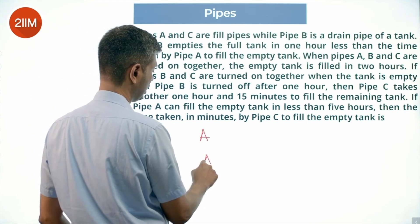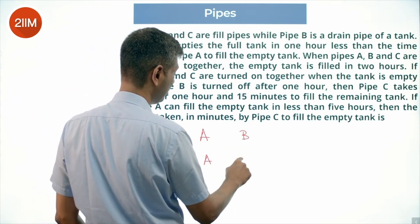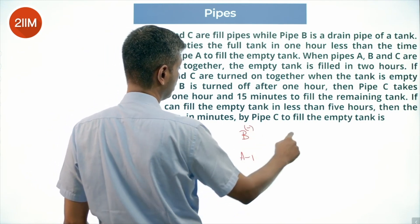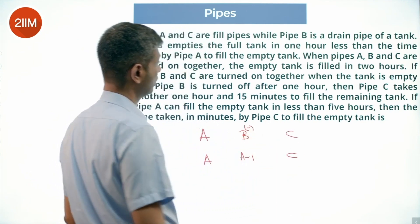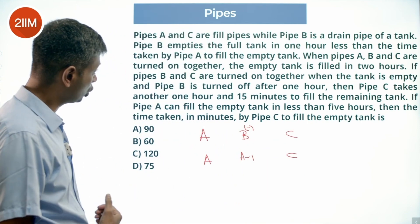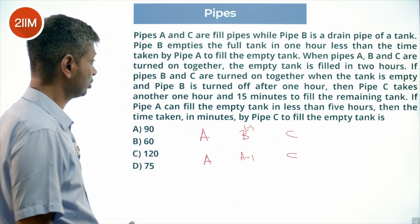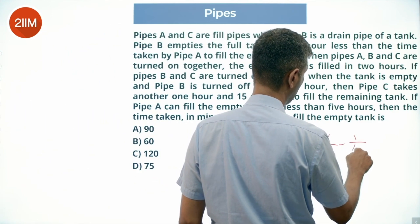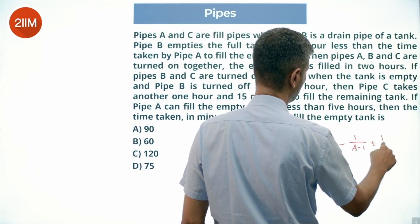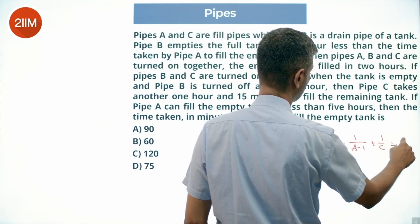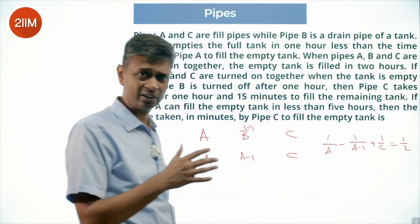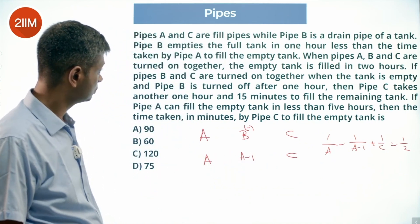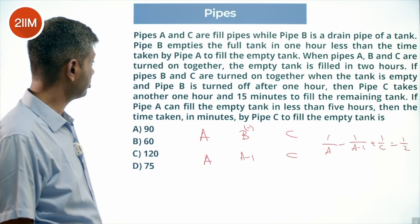So pipe A fills in A hours, pipe B drains in (A minus 1) hours, and pipe C fills in C hours. When pipes A, B, and C are turned on together and the empty tank is filled in two hours: 1/A minus 1/(A-1) plus 1/C equals 1/2. This gives us one equation in A, (A-1), and C.